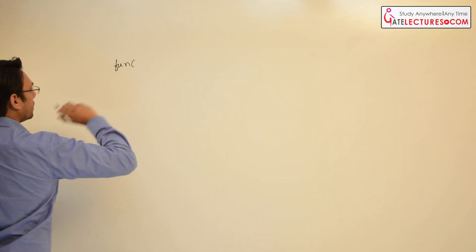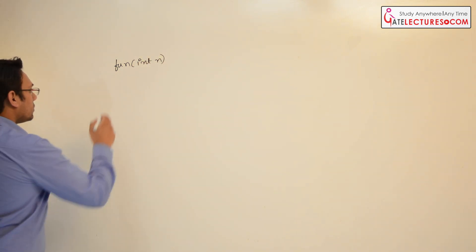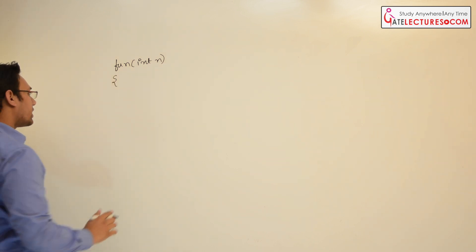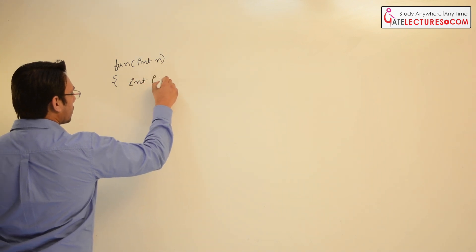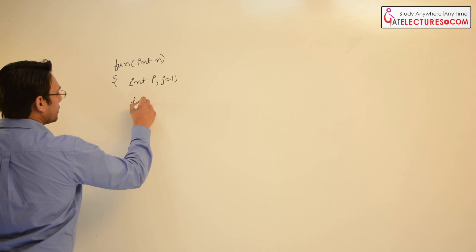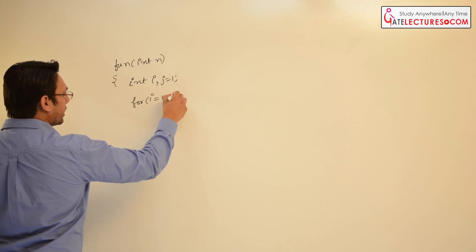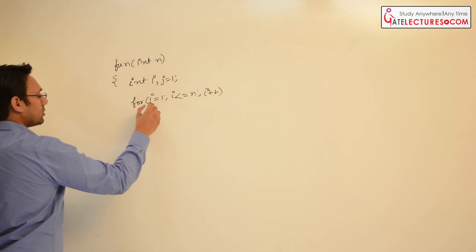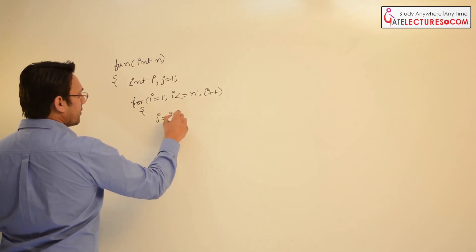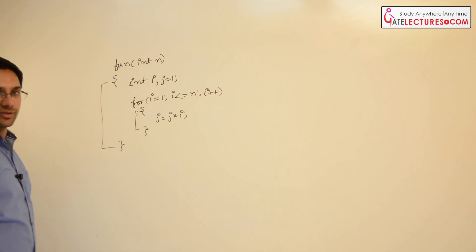We have to write a function to find the factorial of a number, int n. This is a non-recursive program, so I can take a variable i and j — int i, j = 1 — then for i = 1, i <= n, i++. We make j = j * i. This is a very simple program to find the factorial of a number.